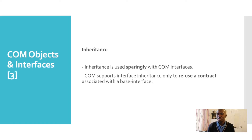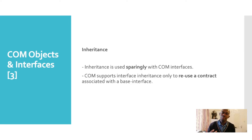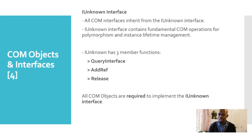Inheritance — quite another important thing to get our heads around. Inheritance is used sparingly with COM interfaces. COM supports interface inheritance only to reuse a contract associated with a base interface. This idea of contracts is a concept to do with interfaces, and we're going to dive a little bit more into this subject as we explore the technicalities of how to create COM objects and how to utilize them.